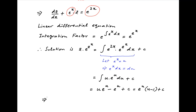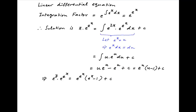Replacing z with e raised to the power y and u with e raised to the power x, the solution is e raised to the power y times e raised to the power e raised to the power x, is equal to e raised to the power e raised to the power x times, in brackets, e raised to the power x minus 1, plus the constant of integration. Multiplying both sides with e raised to the power minus e raised to the power x, we get e raised to the power y is equal to c times e raised to the power minus e raised to the power x plus e raised to the power x minus 1, which is the required solution.